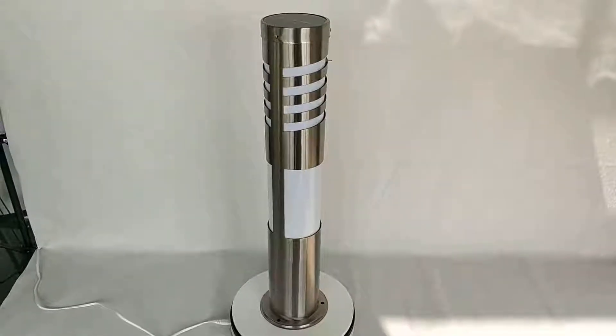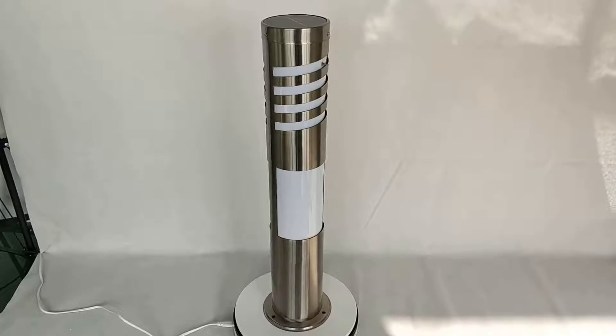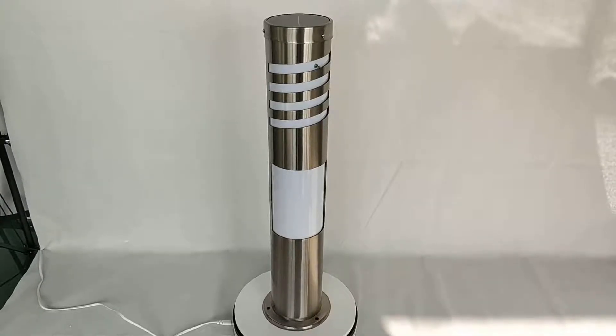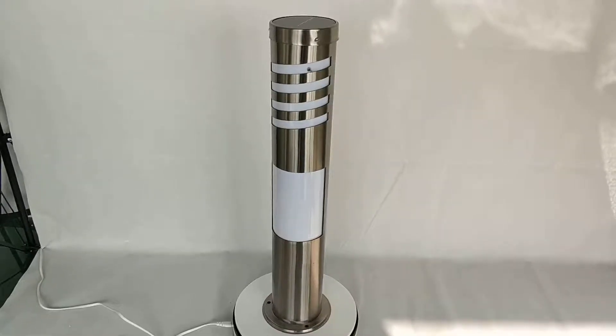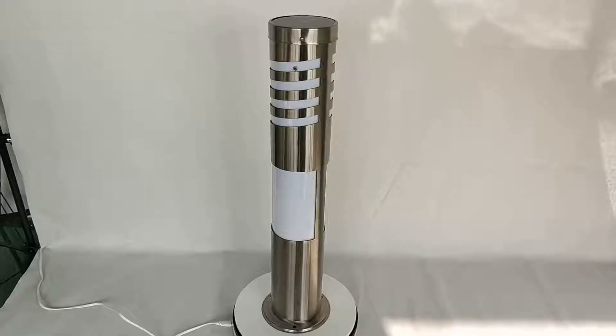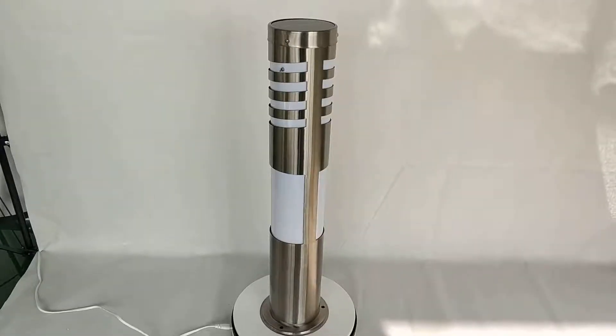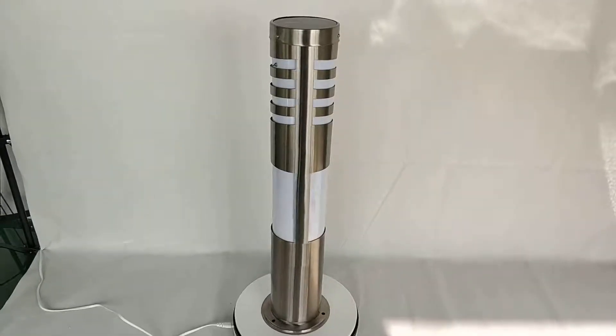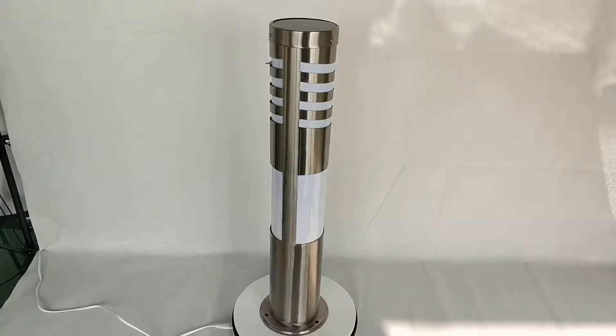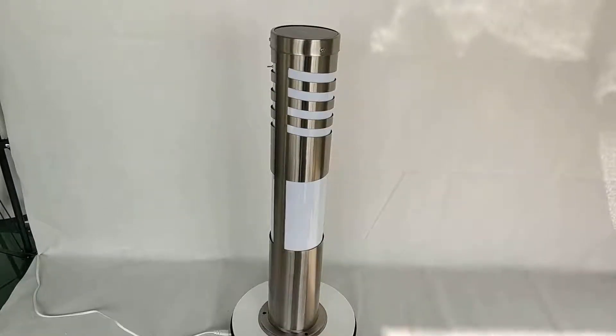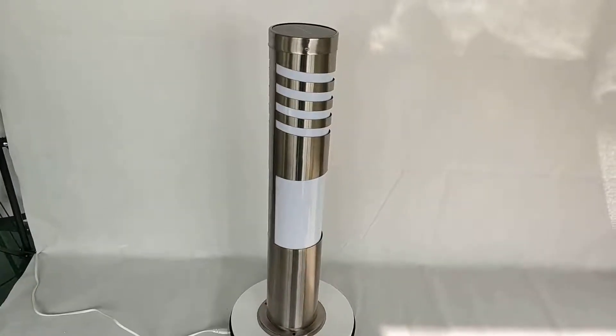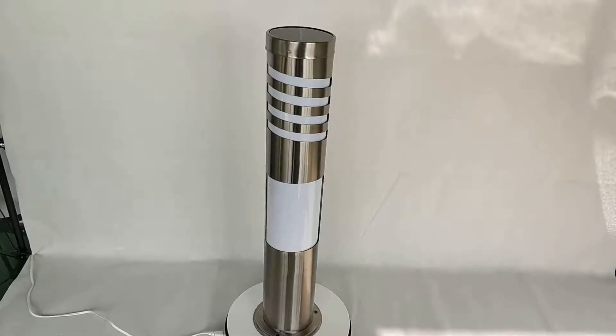This is a stainless steel solar bollard made by Boone Solar. The housing material is number three or four stainless steel. It's very thick with a PC lens inside.